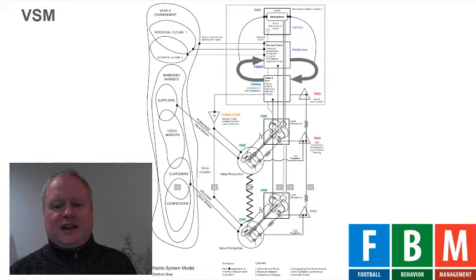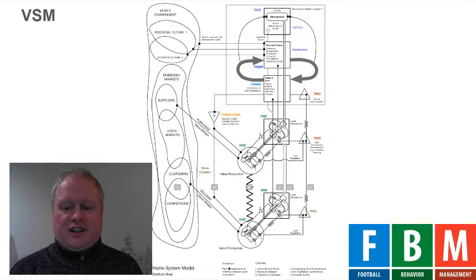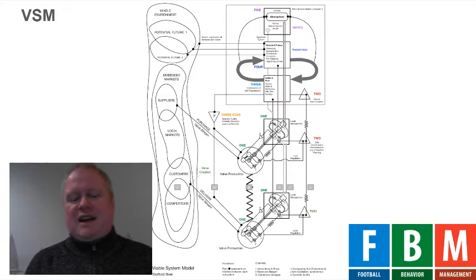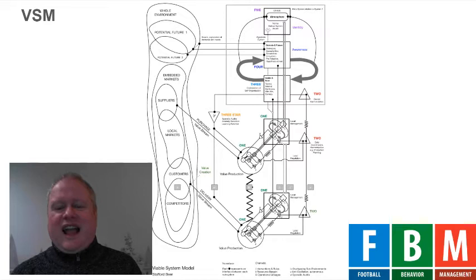System Three is basically the daily operations — the CEO — they run the club to make sure the here and now is running okay and the internal organization is running fine. Then you have System Four, which is the senior management part responsible for the future and relations with the environment. They basically consist of the technical director, the sporting director, the scouts, and staff. They have to make sure that the club is prepared to deal well with the environment — other clubs winning the league — but also with the future, so that they have the right players for next season and the season after.